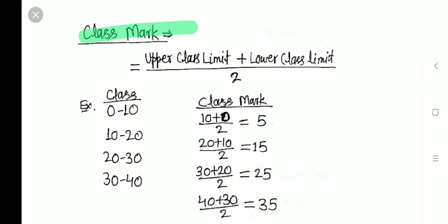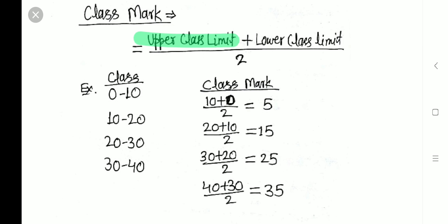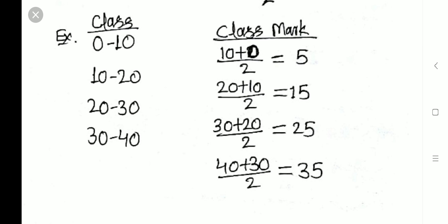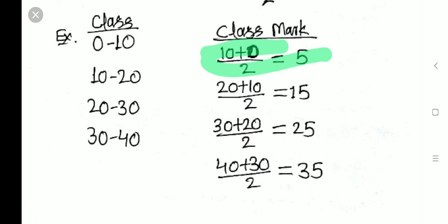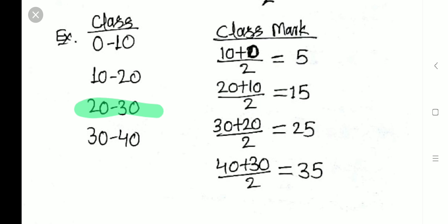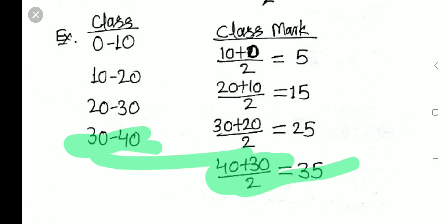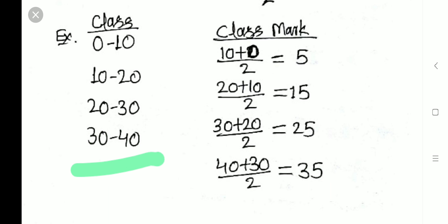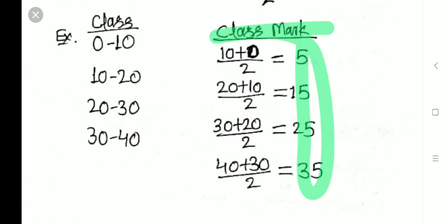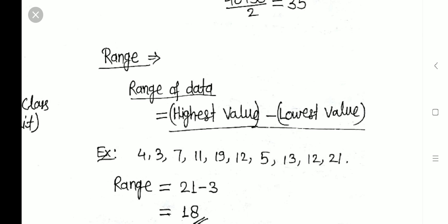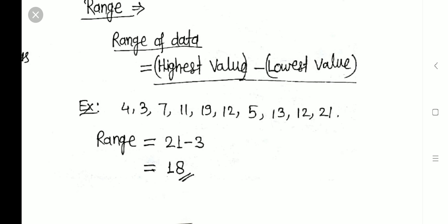The next term is class mark. The class mark is calculated as: (upper class limit + lower class limit) ÷ 2. For example, for the class 0–10: (10 + 0) ÷ 2 = 5; for 10–20: (10 + 20) ÷ 2 = 15; for 20–30: (30 + 20) ÷ 2 = 25; for 30–40: (30 + 40) ÷ 2 = 35. The value obtained by adding both limits and taking half is known as the class mark.